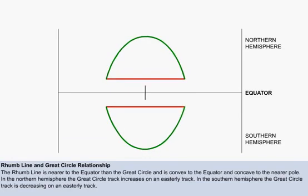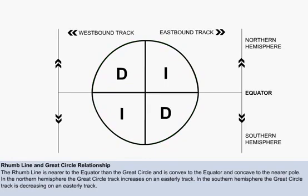An easy way to remember what happens to the great circle track in relation to the rhumb line track is the mnemonic DIID. The image shows four segments, the north and south hemispheres and a westerly and easterly track.